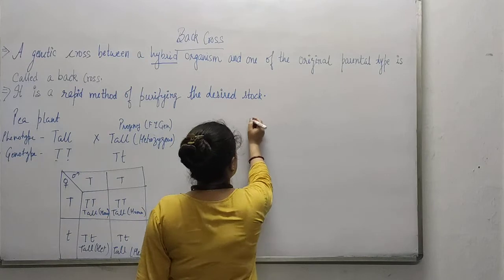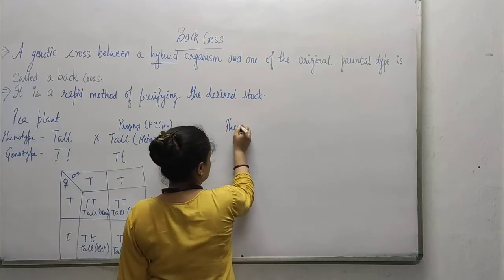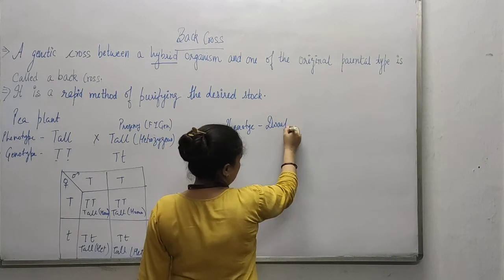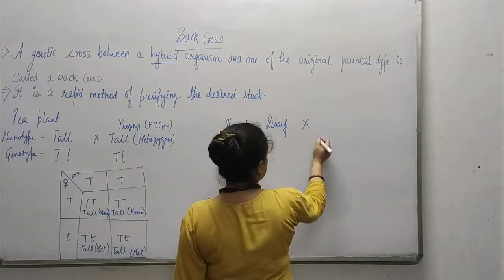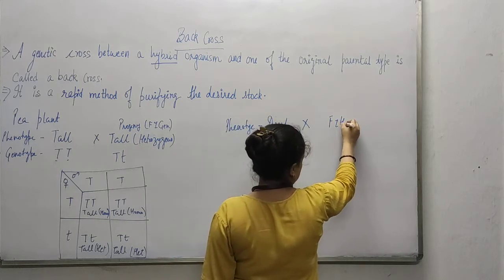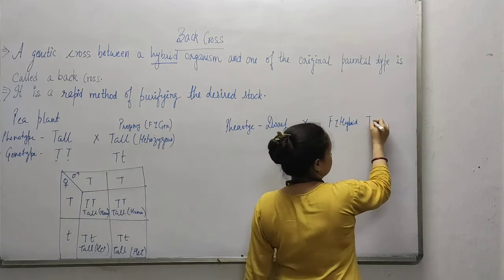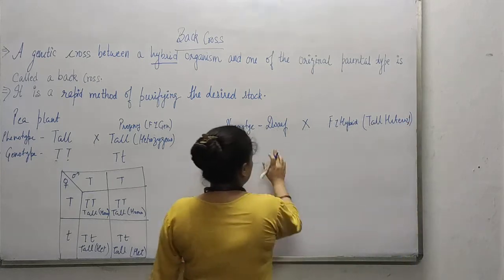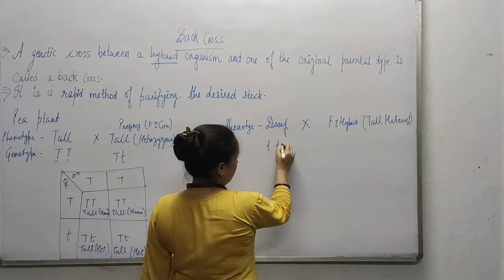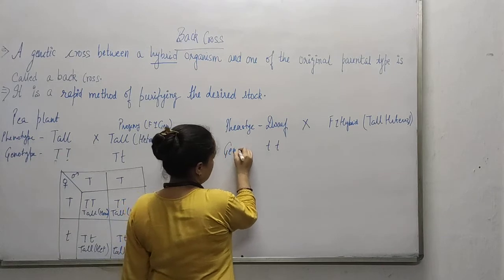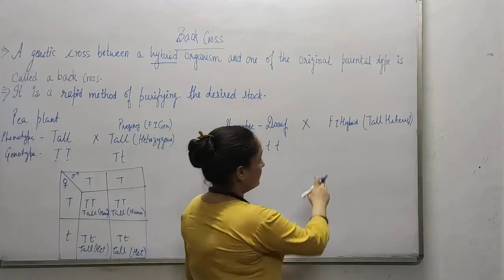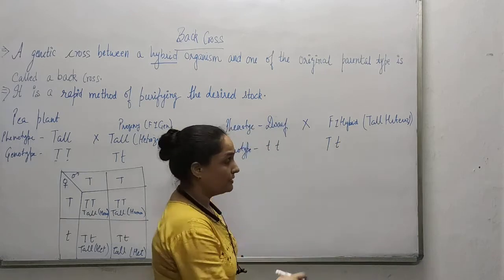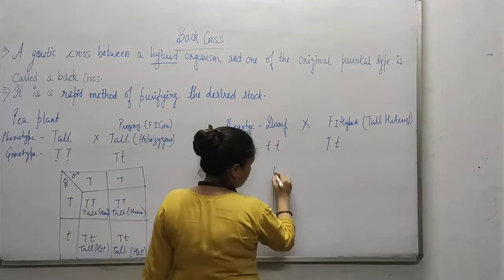The other cross we can do is with the recessive phenotype — here we have taken a dwarf parent along with the F1 hybrid, which is tall but heterozygous. Because it is a dwarf, the genotype will be both lower case T (tt). And here the F1 hybrid was heterozygous tall, so it has the genotype of one upper case T along with one lower case T (Tt).